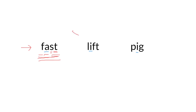Now look at the second word. Can you tell me which two consonants are next to each other? The F and the T. We need to blend the sound of F and T: FT. Lift. Lift.